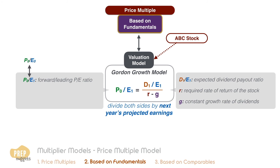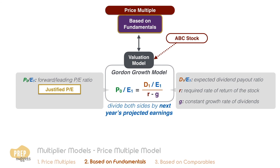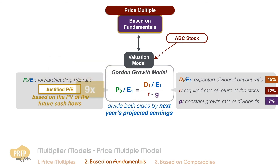Not on actual earnings for the previous period, which would produce a lagging or trailing P/E ratio. This P/E that we calculate here is also referred to as a justified P/E. It's justified because, assuming we have the correct inputs for the right-hand side, the P/E ratio will be based on the present value of the future cash flows. For example, if ABC stock has an expected dividend payout ratio of 45%, a required rate of return of 12%, and an expected dividend growth rate of 7%, the firm's justified P/E ratio will be 9 times.